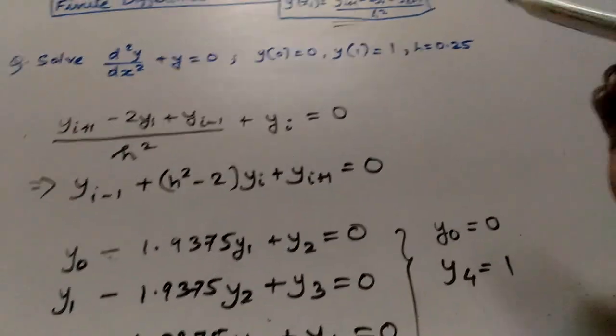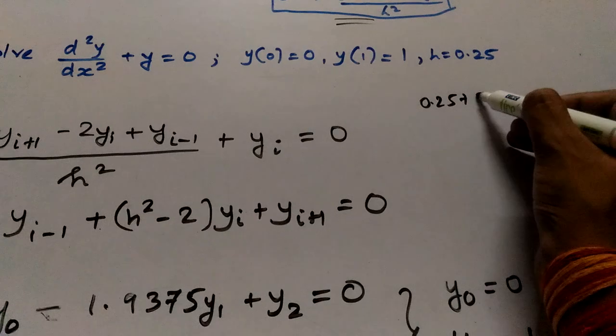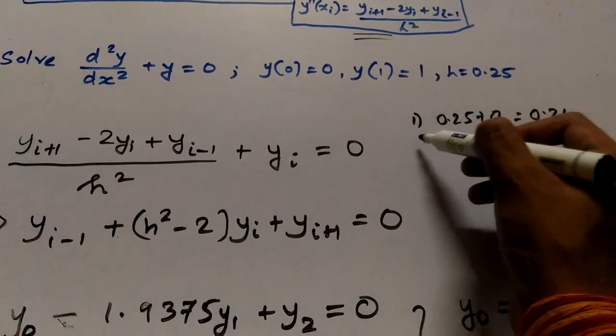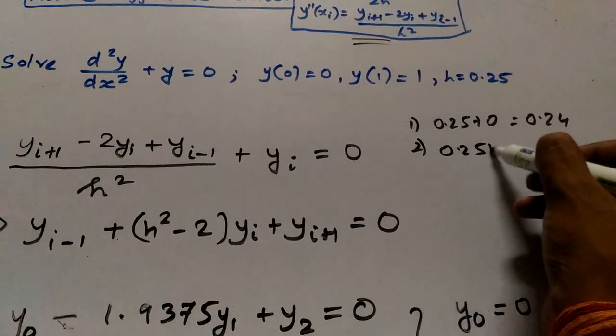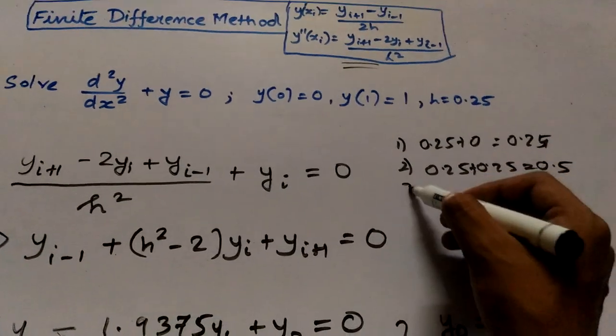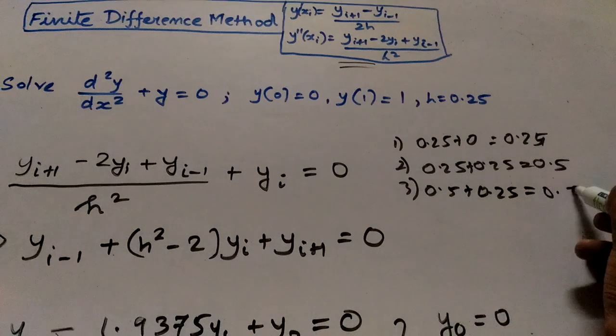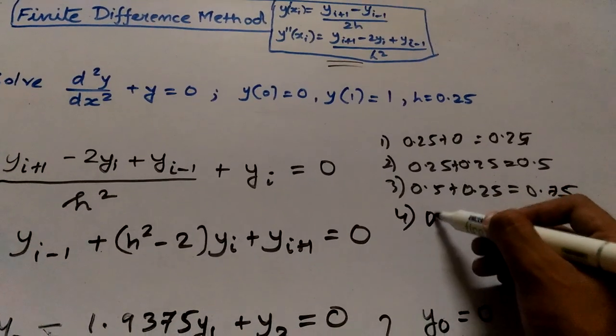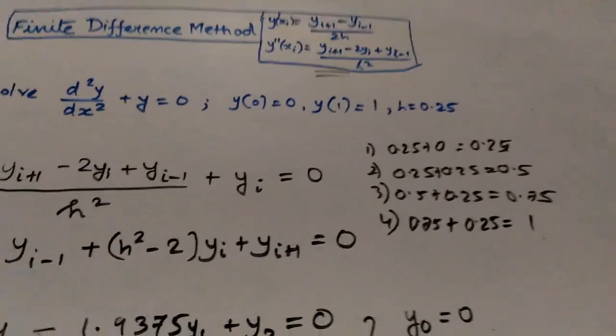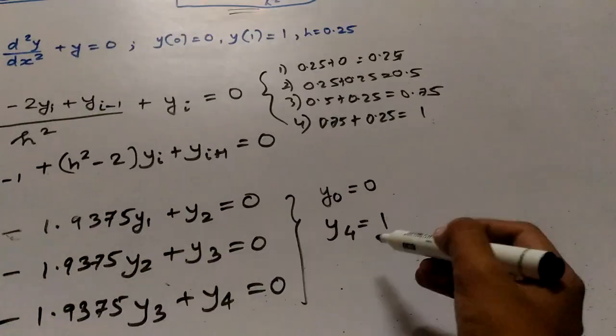Why y_4 is 1? Because adding 0.25 to 0 we get 0.25, this is the first one. Second, 0.25 plus 0.25 we get 0.5. Third, 0.5 plus 0.25 is 0.75, and last number 4 is 0.75 plus 0.25 is 1. So n equals 4, therefore y_4 is 1.